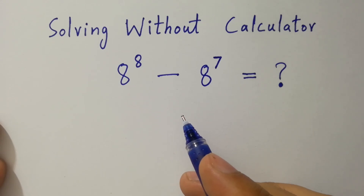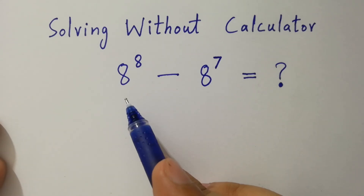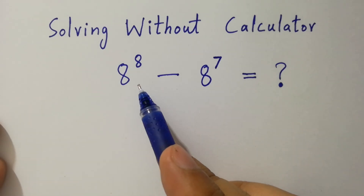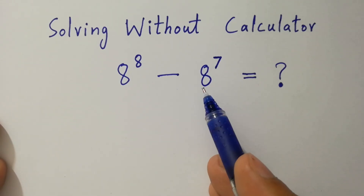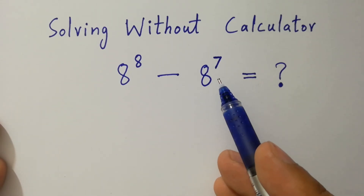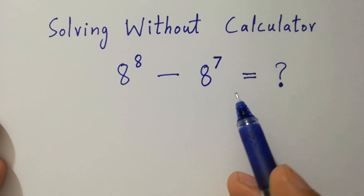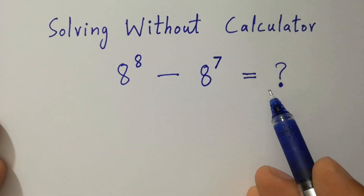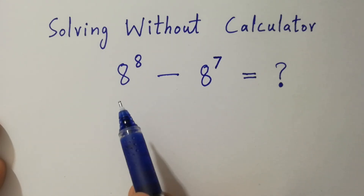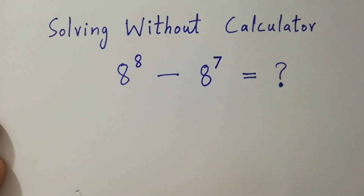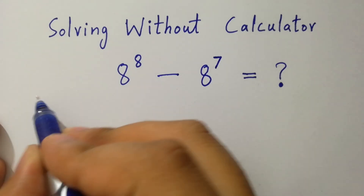Hello friends. 8 to the power 8 minus 8 to the power 7 equals what? Solving without a calculator. Let's have a solution.